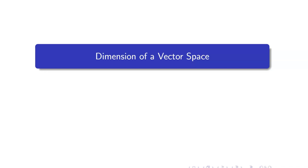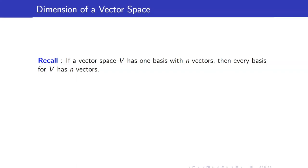In this lesson, I am going to talk about the dimension of a vector space. Let us recall this theorem from our last video lecture. We learned that if a vector space V has one basis with n vectors, then every basis for V has n vectors. This means that the number of elements in a basis is always the same, regardless of the choice of basis. Hence, we can now define the dimension of a vector space as follows.